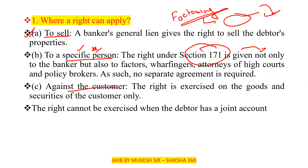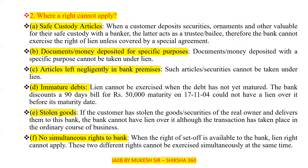Regarding where the right of lien can and cannot apply: the right is exercised only on the goods and securities of the customer. The right cannot be exercised when the debtor has a joint account. We will discuss both where the right can apply and where it cannot — please remember the cases where it is not applicable.